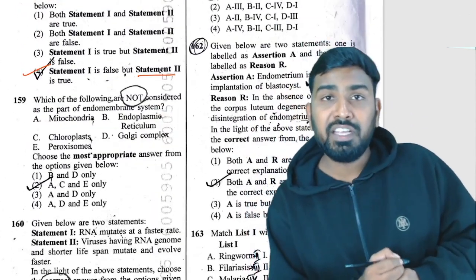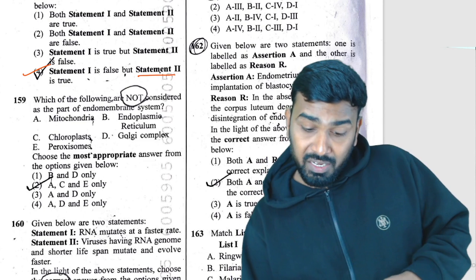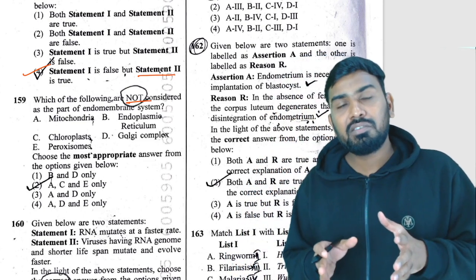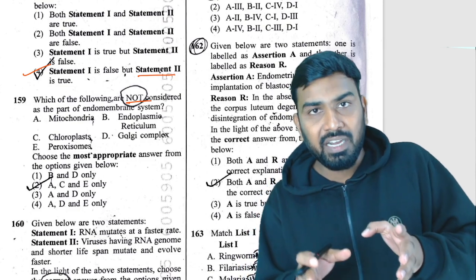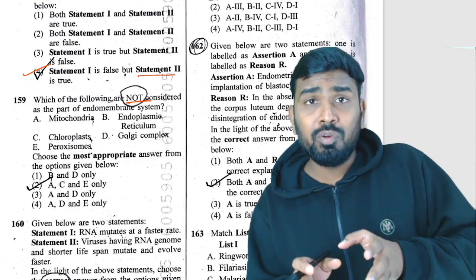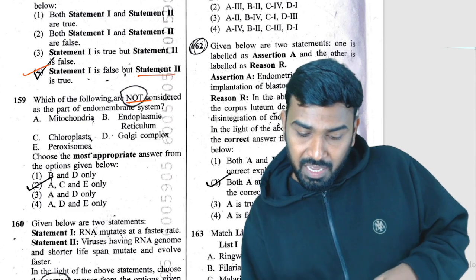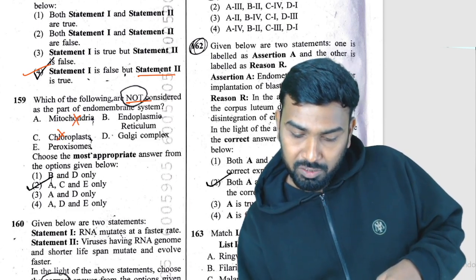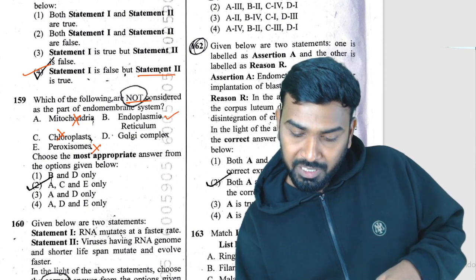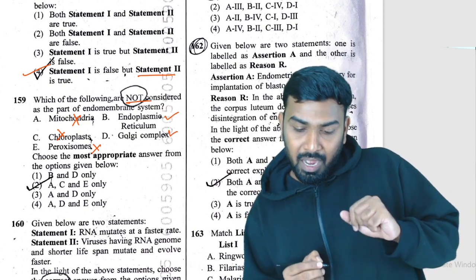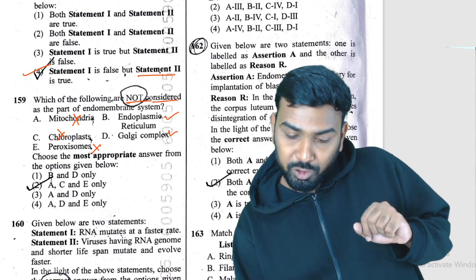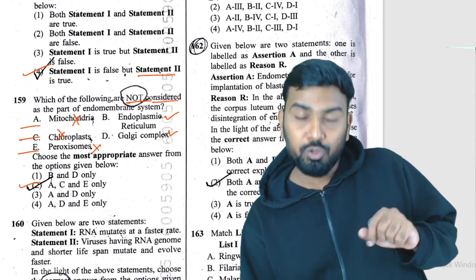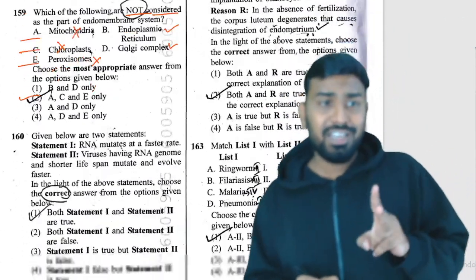Question 159: the endomembranous system includes connectivity of membranes — Golgi complex, lysosomes, and endoplasmic reticulum. Mitochondria, chloroplast, and peroxisome are NOT part of it. The question asks what is NOT considered part of the endomembranous system, so options A and C (mitochondria, chloroplast, peroxisome) — answer is option 2.